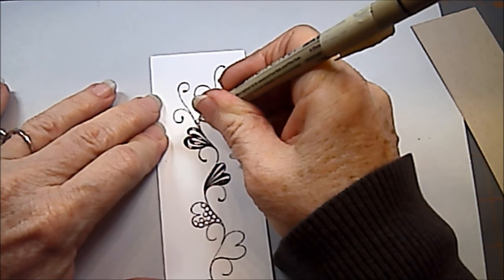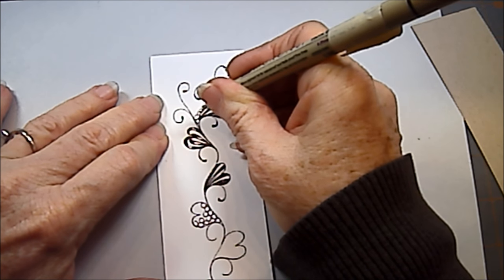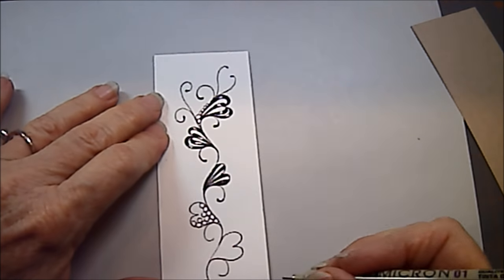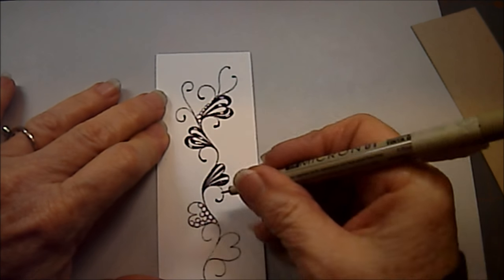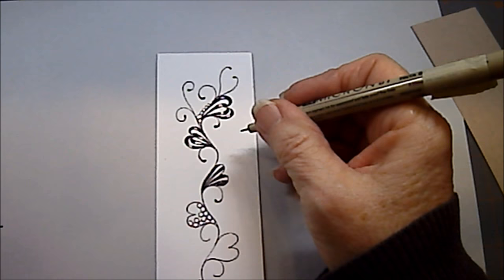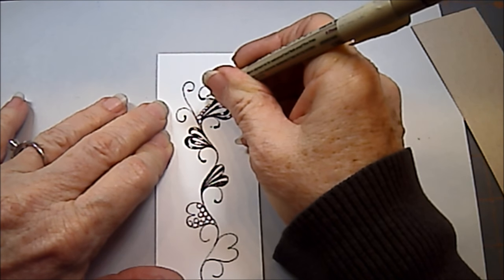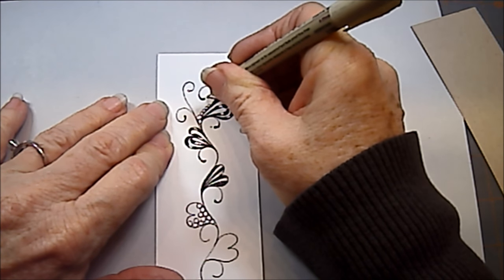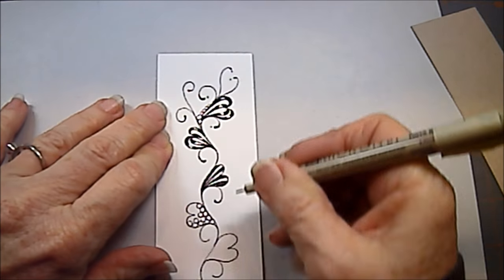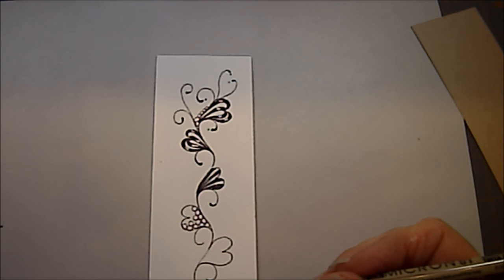Or you can just do what I call a little fescue on here. That helps. Come back and add circles up your stem. That is a great embellishment for this tangle. I also like to add just a little dot at the end. That one didn't fill in. At the end of there, that's another little embellishment that you can do.